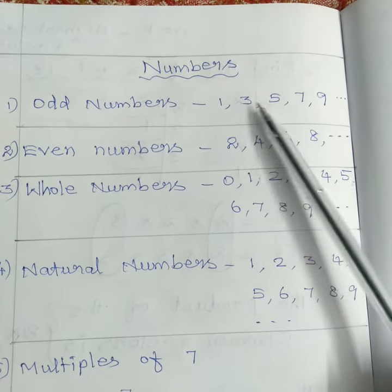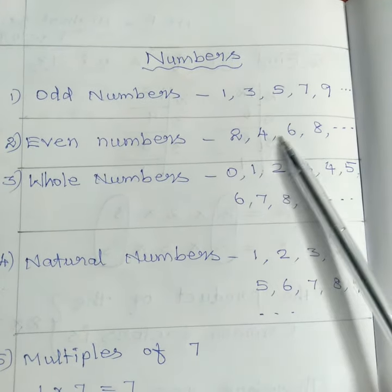Odd numbers are 1, 3, 5, 7, 9. Even numbers are 2, 4, 6, 8.